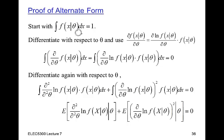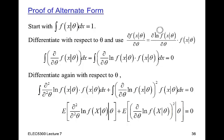Now I'm going to differentiate with respect to theta. When I differentiate, I get the derivative equal to zero, having switched the order of differentiation and integration. I'll use the same trick as before: differentiating the log gives one over f times the derivative of f, so the derivative of f equals the derivative of the log times f. I replace the expression inside with this.